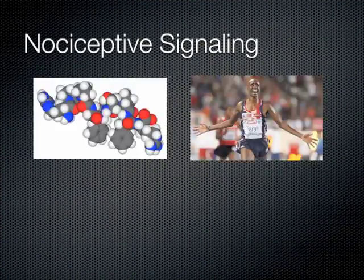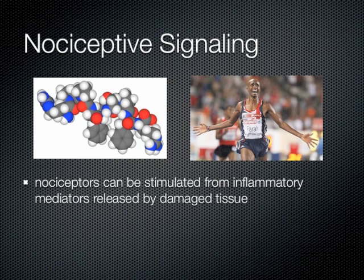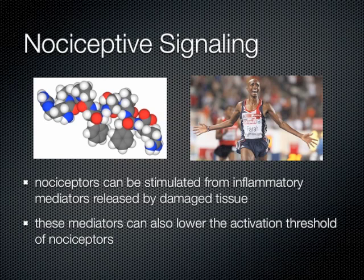Nociceptors can be stimulated by inflammatory mediators released by damaged tissue. An example of an inflammatory mediator is bradykinin. These mediators can also lower the activation threshold of nociceptors — in other words, less stimulation is required for activation. An example of this is your legs feeling sore the day after a tough workout.